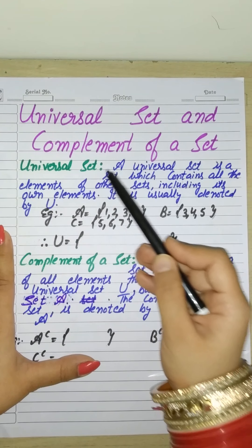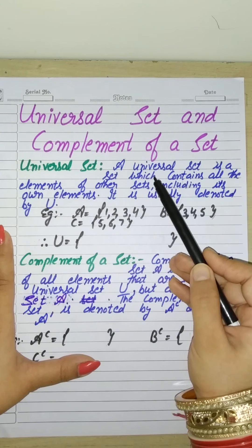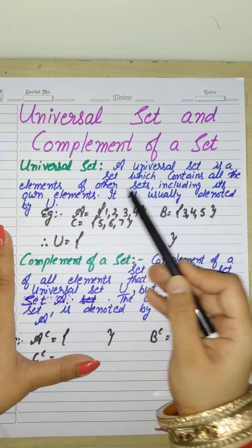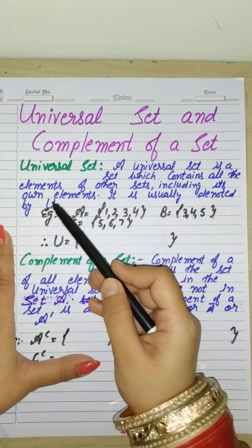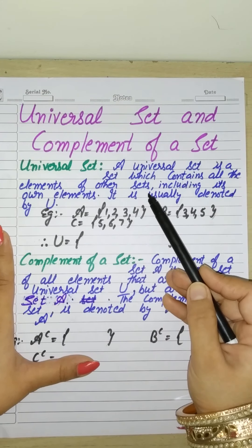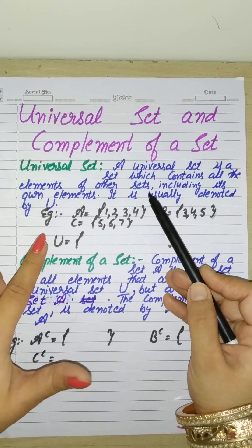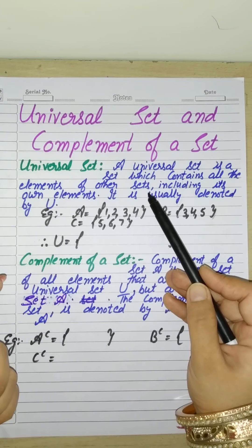So universal set, let's see the definition. A universal set is a set which contains all the elements of other sets.